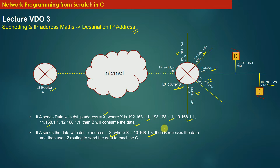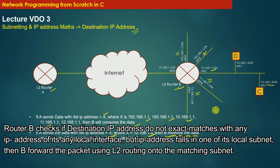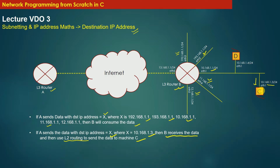In this scenario, the L3 router B will receive the data but will not consume it. Rather, router B will use L2 routing to further send the data to machine C. When machine C receives the data, it will check that the destination IP address in the IP header is equal to the IP address of its local interface. This condition becomes true and machine C will consume the data.